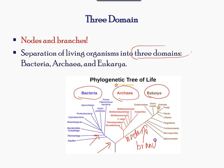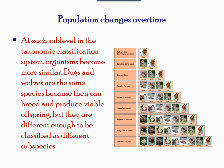The organisms are related to the degree of closeness if they are close within a branch. The organization shown, inclusive from domain, kingdoms, phylum, class, order, family, genus, and species, is called taxonomy.